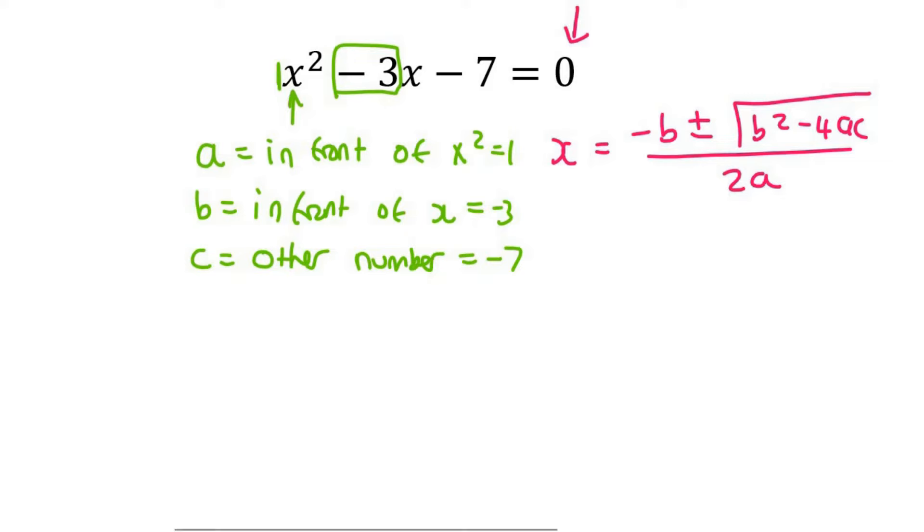And then what you do is you just fill that into the formula. So x equals, then the formula says minus. Now look at b, it's minus 3, so you put a minus 3. Then there's a plus minus. Now go in brackets for this one, and that's going to be minus 3 squared minus 4. Now the formula says a comes next, which is 1, and then c, which is minus 7.